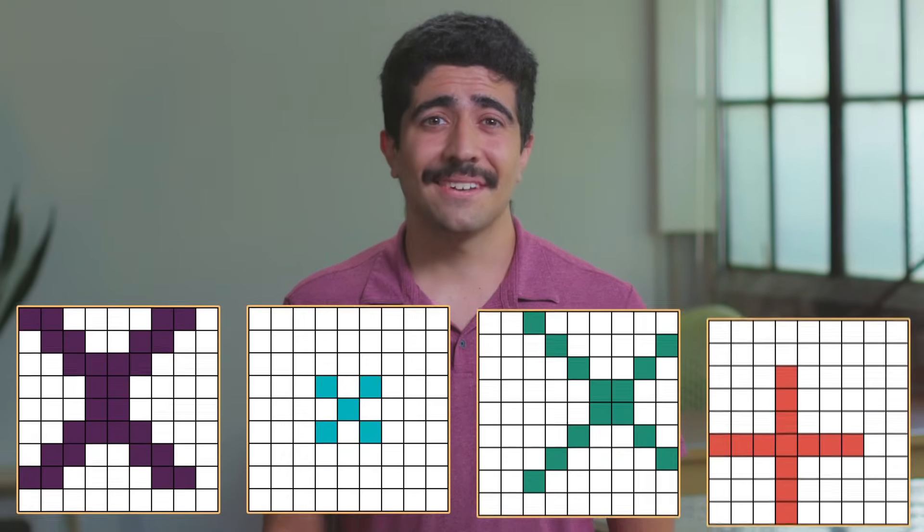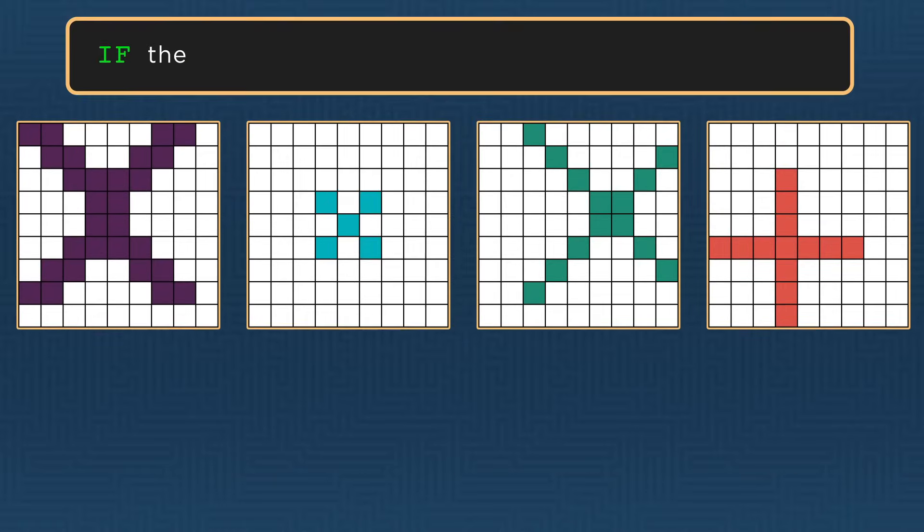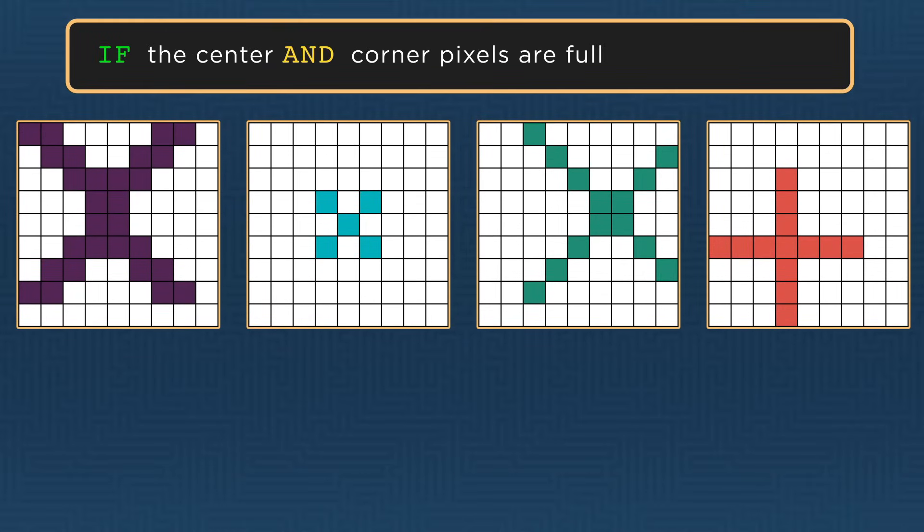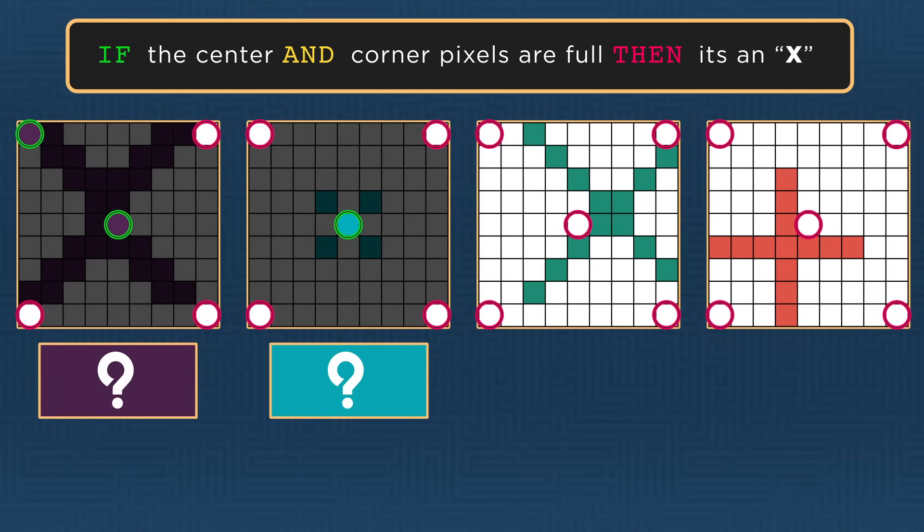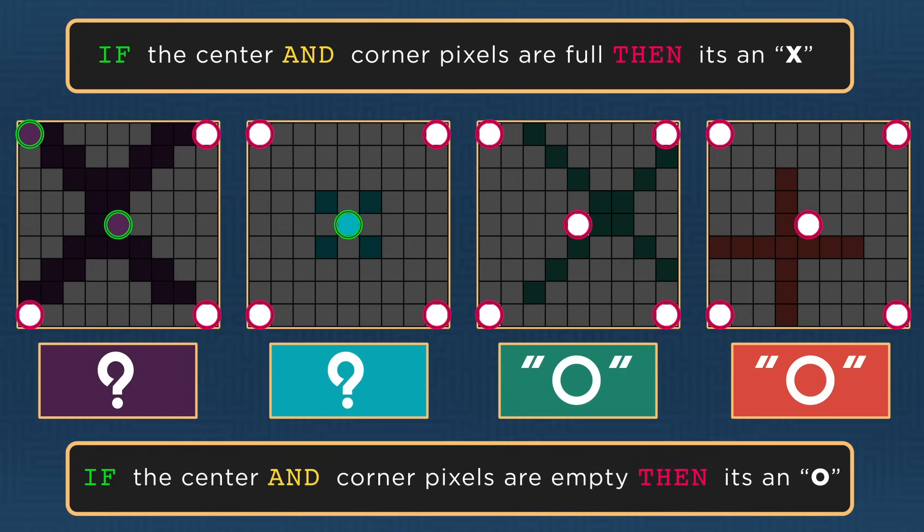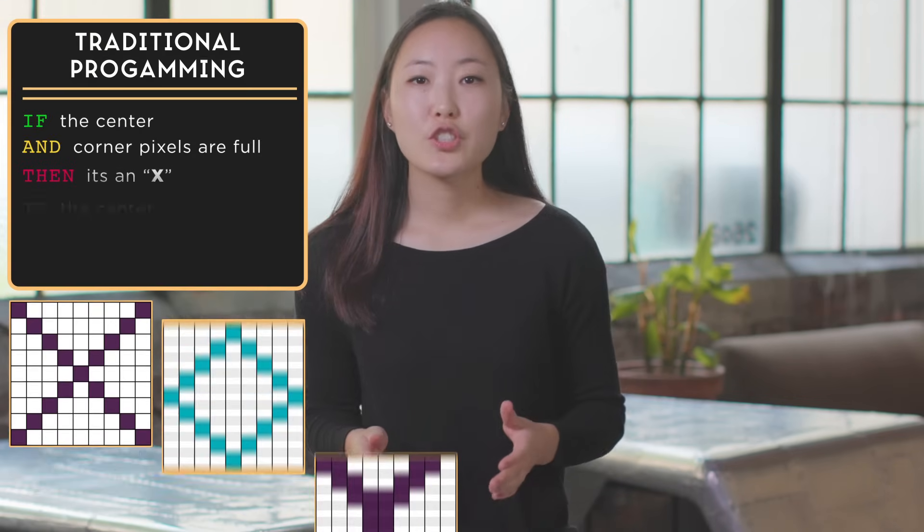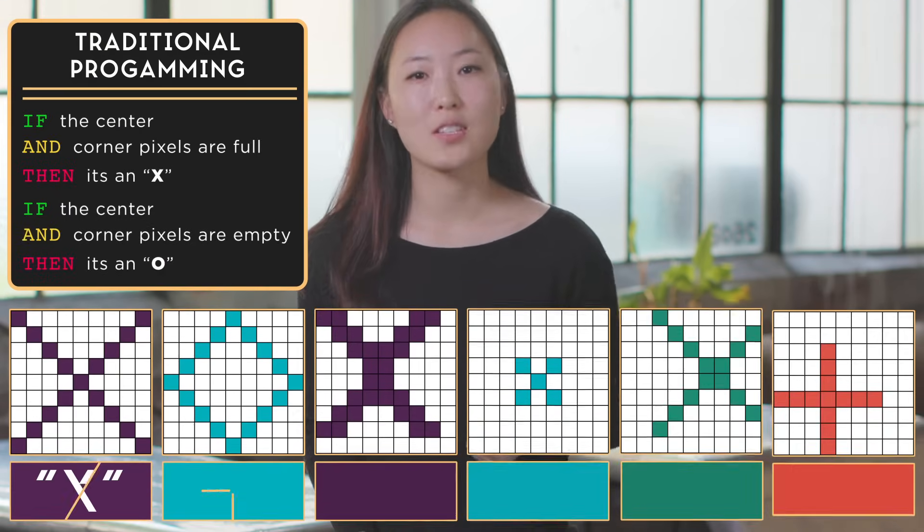But what about asking the computer to recognize these images? What might the computer think these are? We gave the computer a strict definition of what an X looks like, but these images don't fill all the necessary pixels to fit the definition. So the computer doesn't think these are X's at all. In fact, the computer thinks these are O's because the corners and center pixels are blank, and that fits the definition of an O that we gave it. In this example, traditional programming only works some of the time.